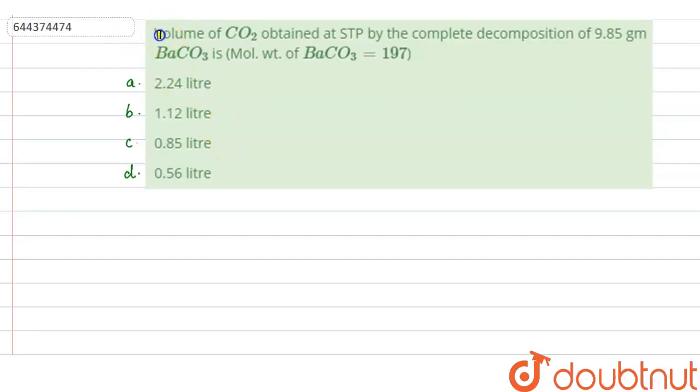The question says that volume of CO2 obtained at STP by the complete decomposition of 9.85 gram barium carbonate is... molecular weight of barium carbonate is equal to 197. Option A: 2.24 liter, option B: 1.12 liter, option C: 0.85 liter, and option D: 0.56 liter.